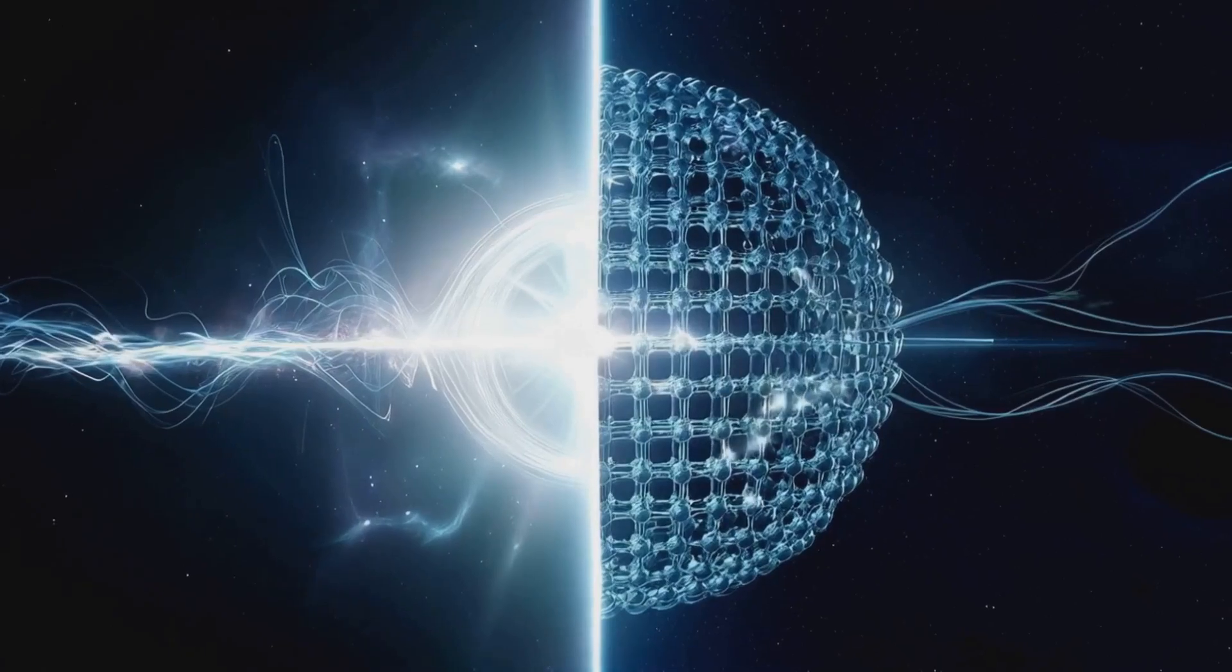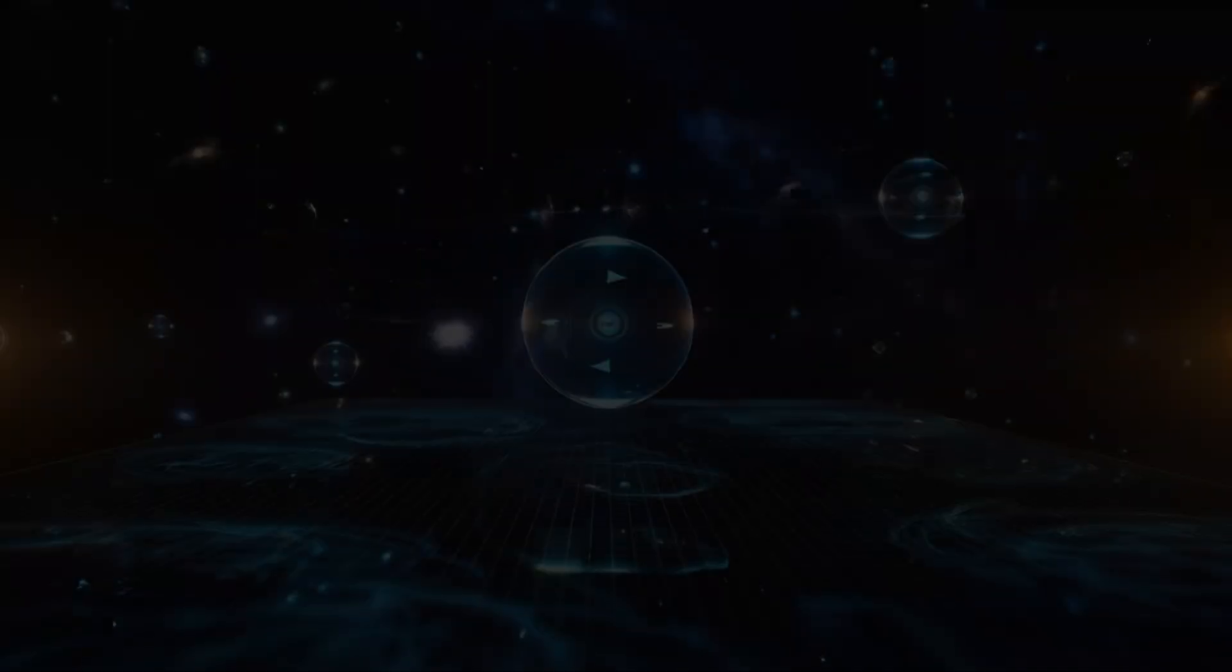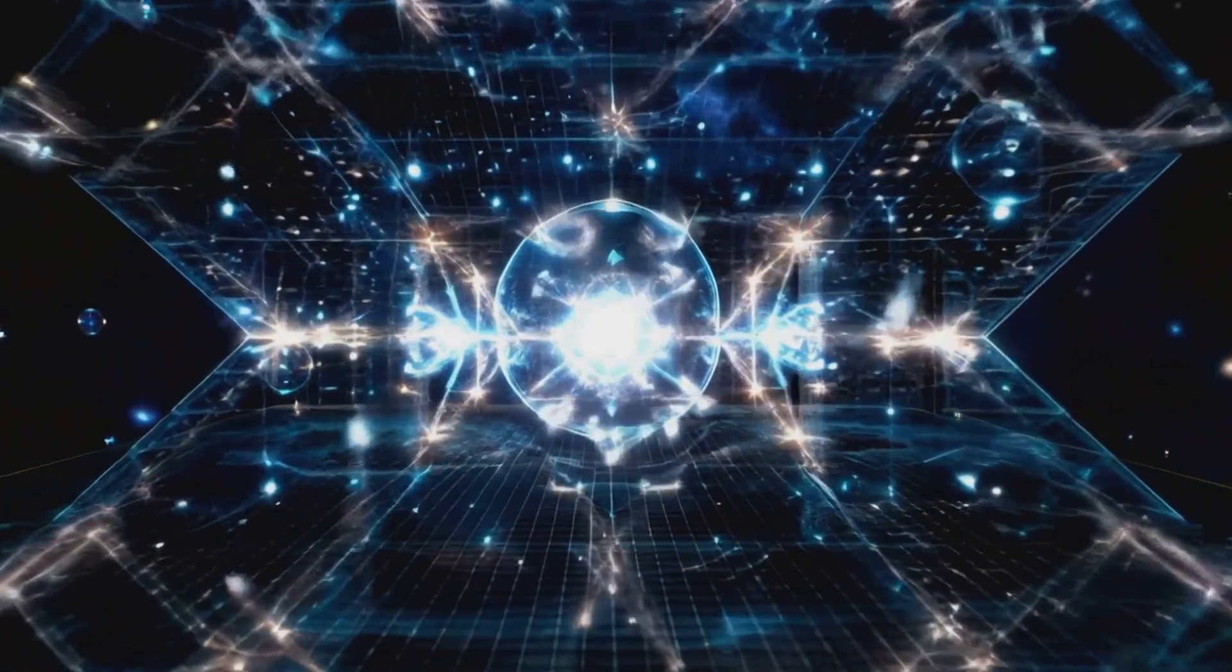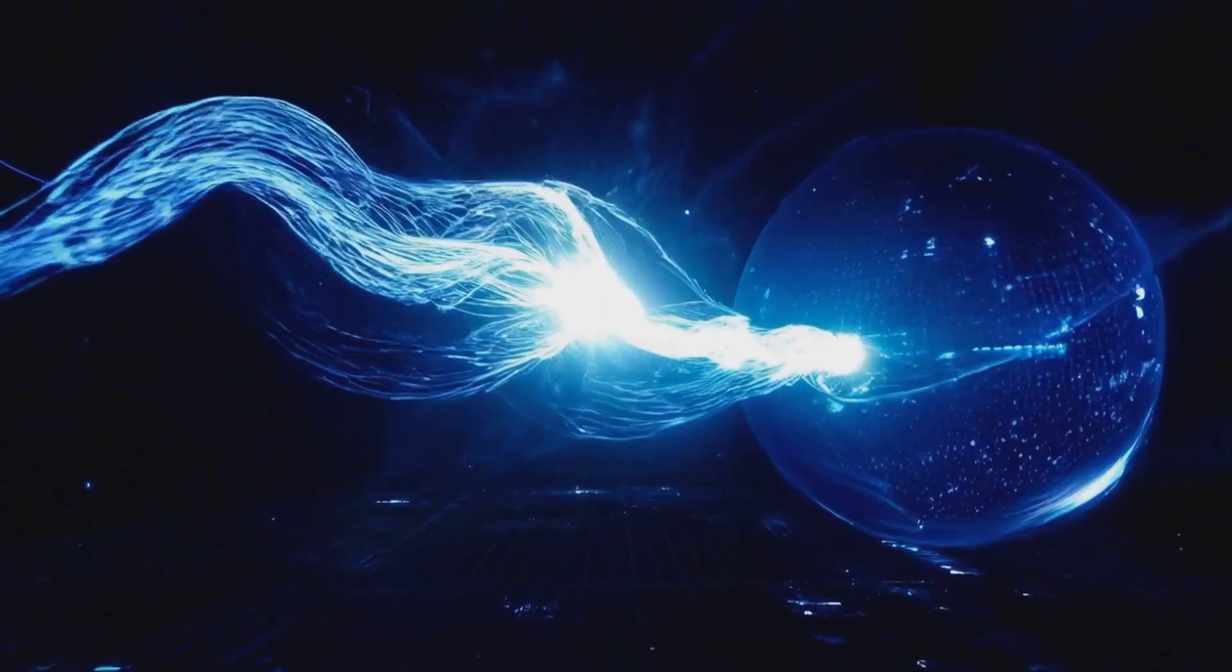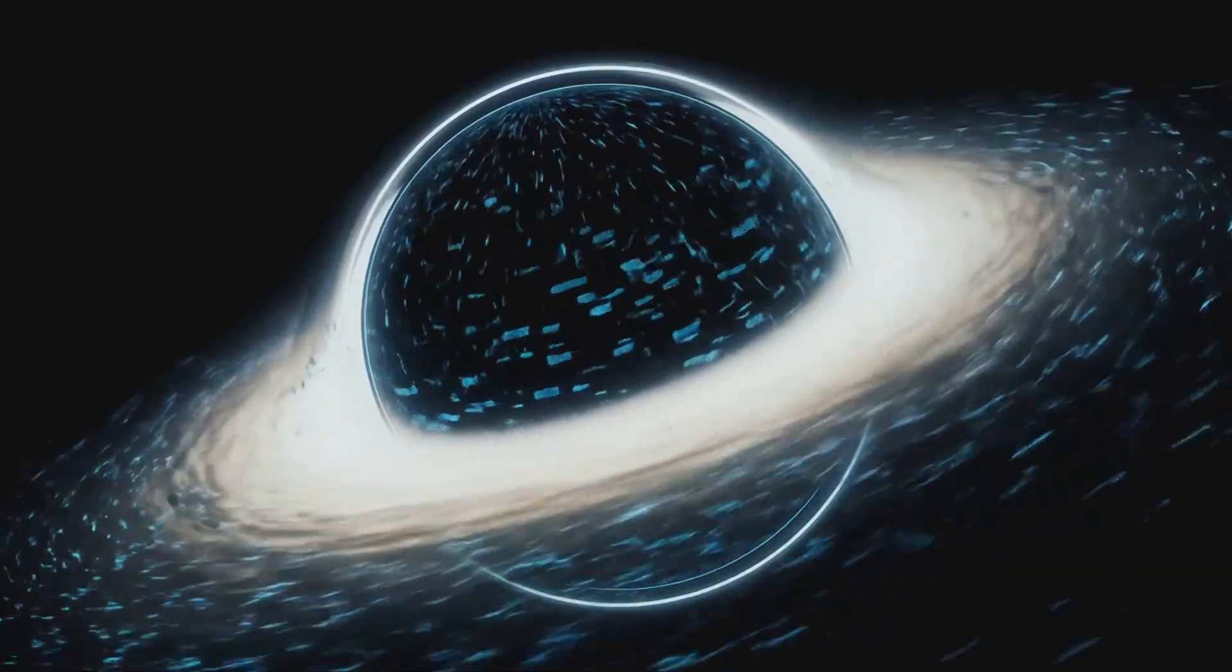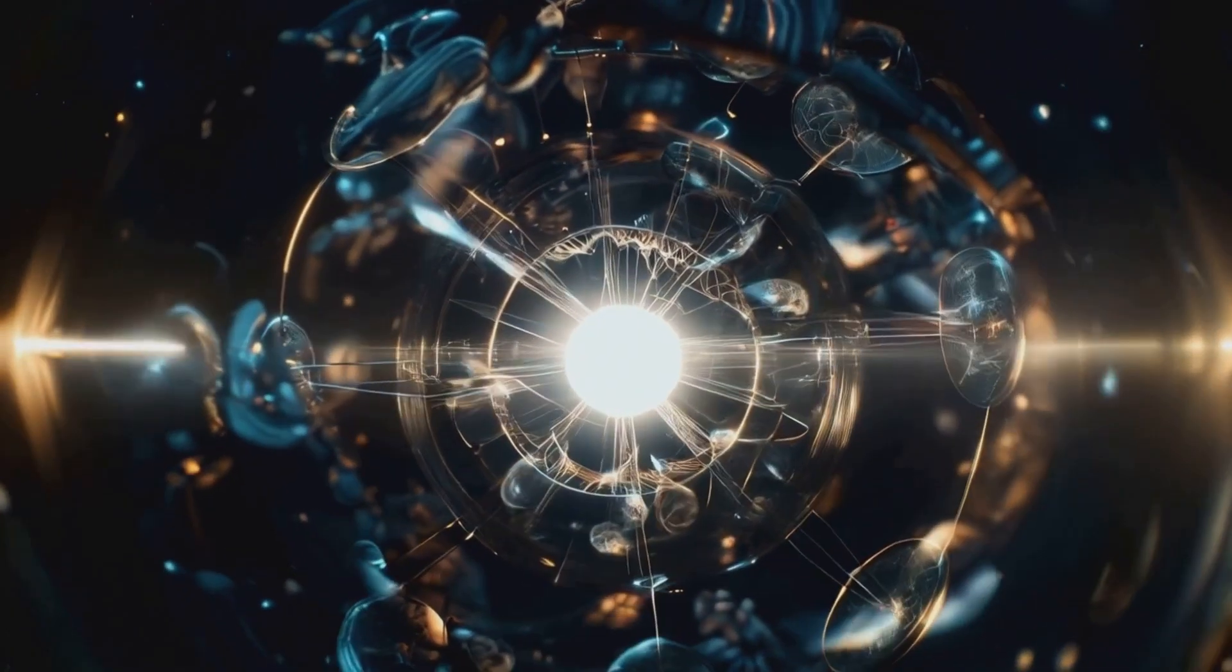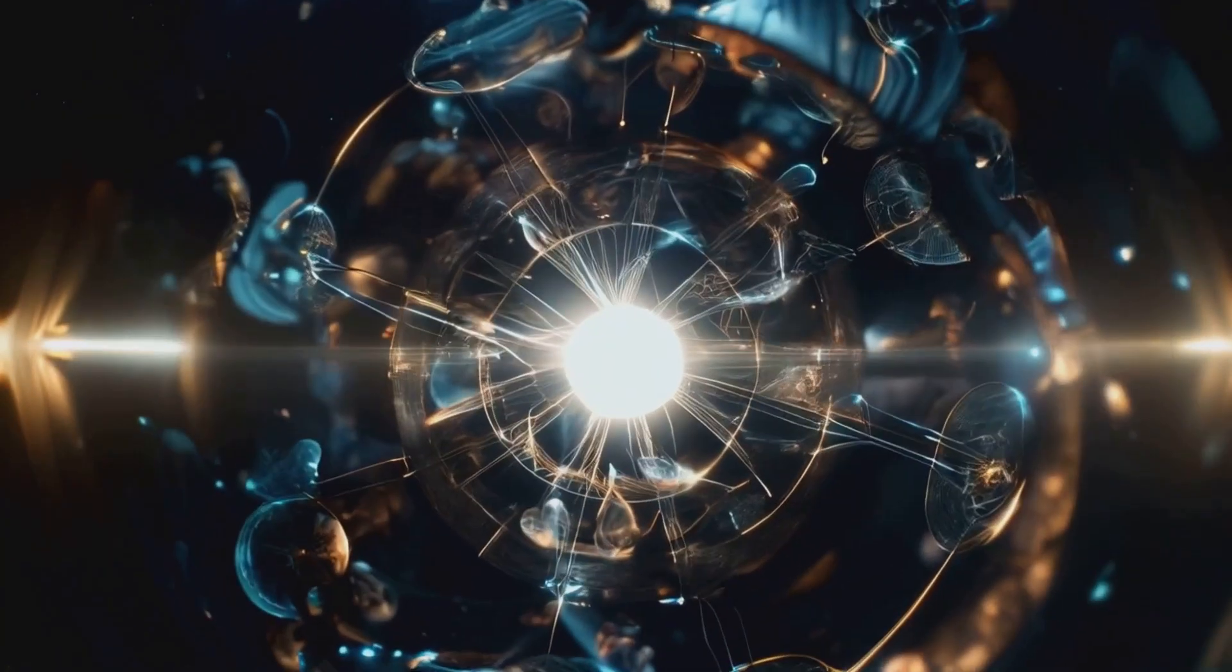Imagine the event horizon as a quantum mirror. Information falls into the black hole, passing through the event horizon. This information isn't lost, but encoded onto the surface of the event horizon, becoming part of the universe's holographic blueprint. This process is key to understanding how the universe maintains its holographic nature.